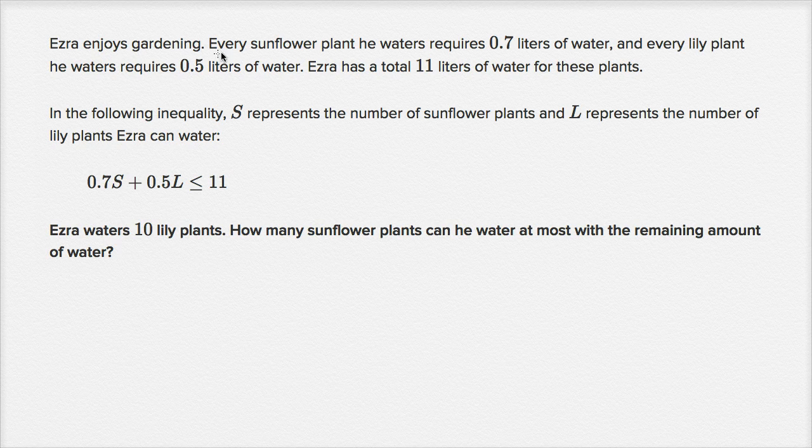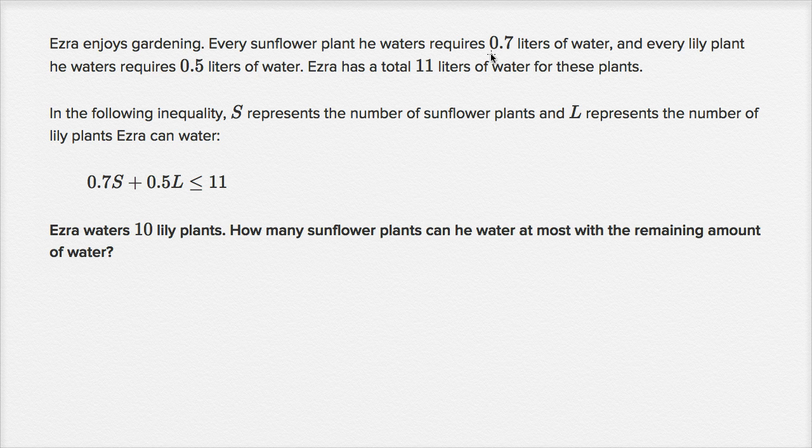Ezra enjoys gardening. Every sunflower plant he waters requires 0.7 liters of water, and every lily plant he waters requires 0.5 liters of water. Ezra has a total of 11 liters of water for these plants. In the following inequality, S represents the number of sunflower plants, and L represents the number of lily plants Ezra can water.